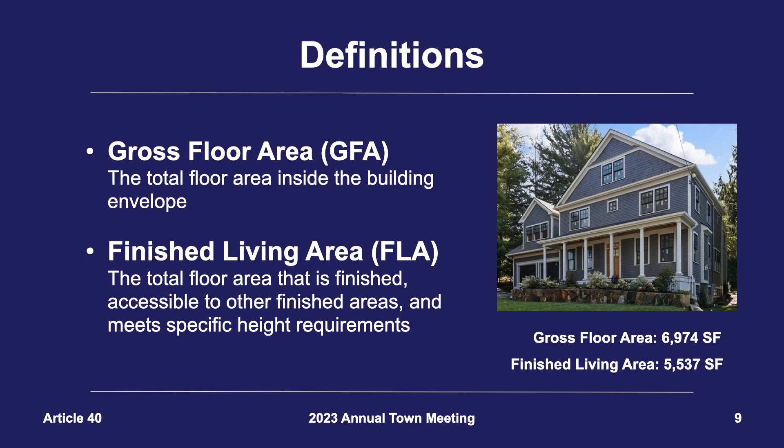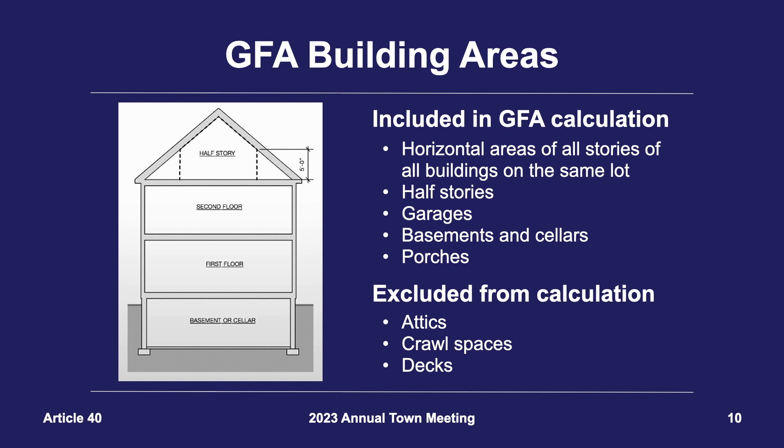There are two definitions of floor area used in this presentation. Gross floor area, or GFA, is essentially a measurement of the total floor area inside the envelope of the building. Finished living area is a measure of the inhabitable areas of the building that meets certain height requirements. In Lexington, GFA includes all horizontal areas of all stories of all buildings on the same lot, any half stories, garages, basements, cellars, and porches. Excluded are attics, crawl spaces, and decks.